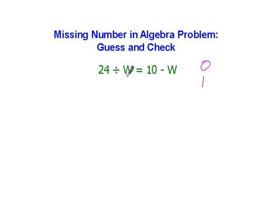How about one? 24 divided by one. If I put a one in for W, this side is going to equal 24. 10 minus 1 is equal to 9. So when I have a one in place of the W, one side is 24 and the other side is 9. That's not equal to each other. 1 does not work in solving this equation.